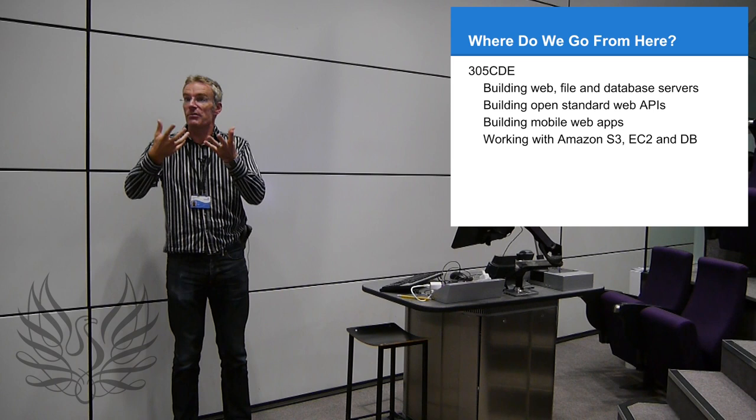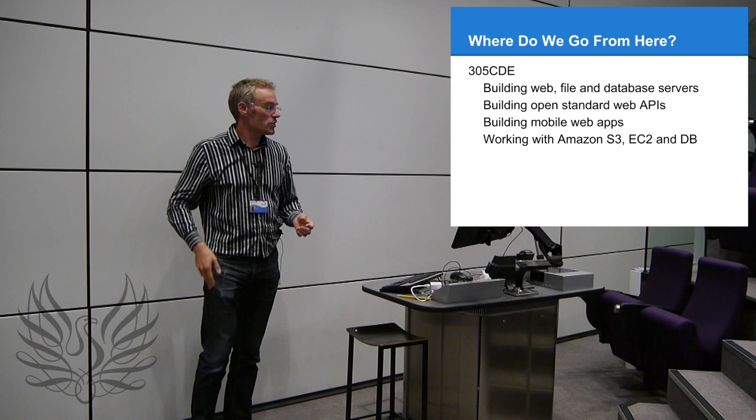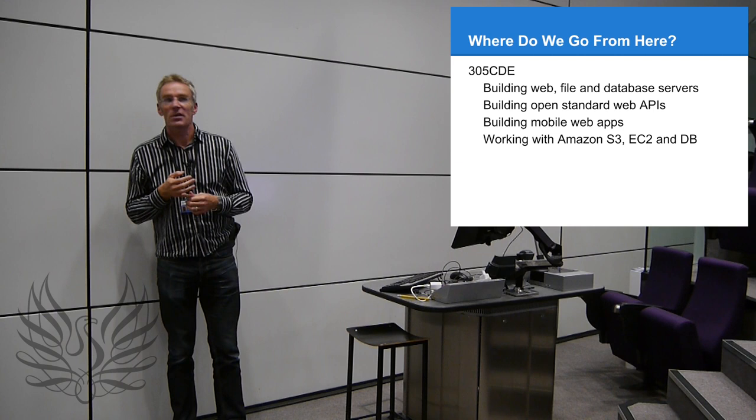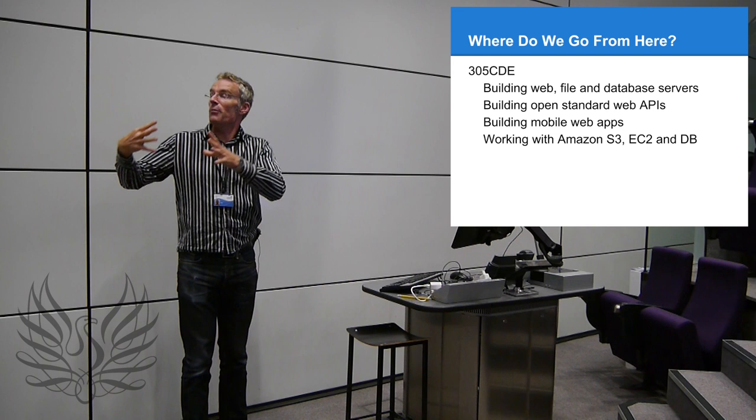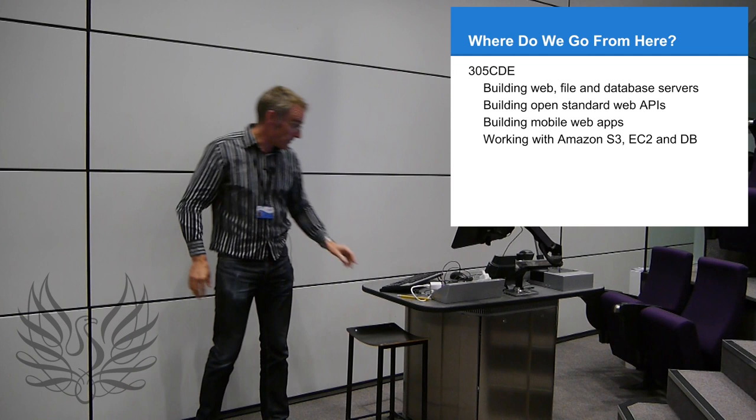In 305 we build web APIs like Facebook and Twitter, and we build our own systems, machine-readable web. We build mobile web apps using jQuery Mobile and lots of JavaScript, and we work with Amazon S3 — Simple Storage — EC2, the Elastic Cloud Compute, and object databases. We take what we've learned in 205 and apply it to more complicated, sophisticated things — the sort of skills people are looking for if you want a job in web.